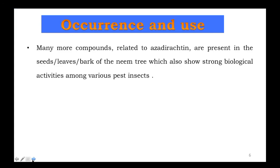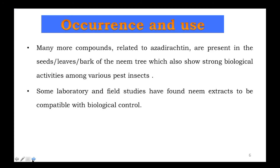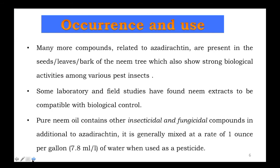Many more compounds related to azadirachtin are also present in the seeds, leaves, and bark of the neem tree, which also show strong biological activities such as pest and insect control. Some laboratory and field studies have found neem extract to be compatible with biological control.